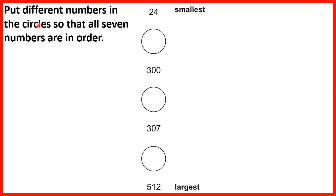Put different numbers in the circles so that all seven numbers are in order. We need the numbers sorted in order from smallest to largest. So for this circle here, we need a number that's larger than 24 but smaller than 300. There are lots of possible answers, but we could have 25 because that's larger than 24 but smaller than 300.